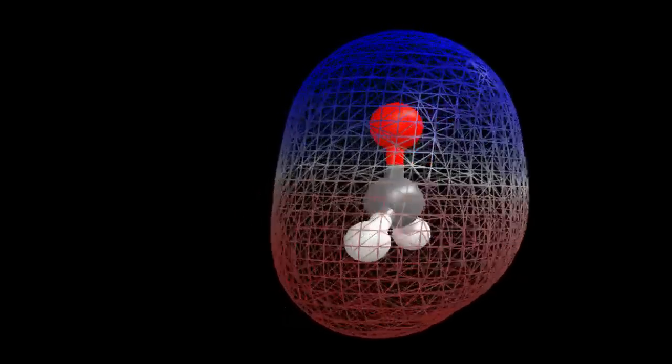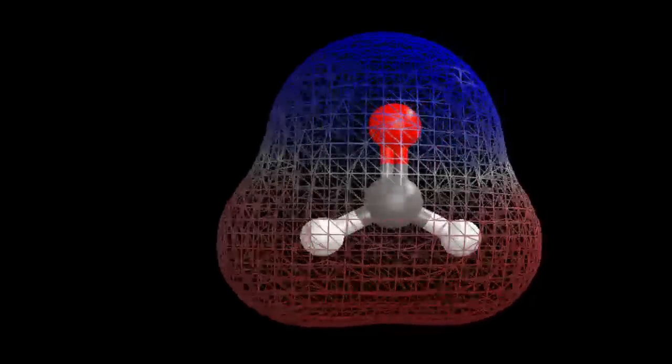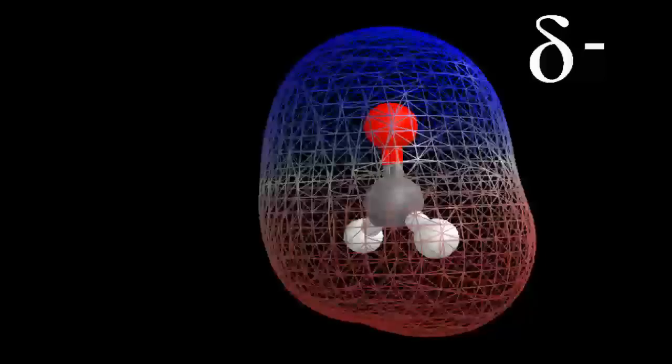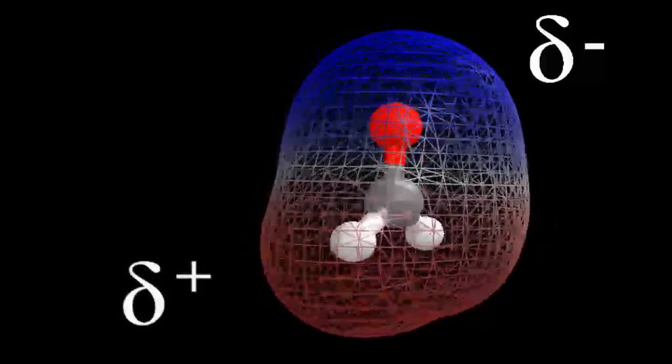We can also look at the surface on the molecule, and you'll see that that blue up there, that's a little bit more negative, and then the bottom, that's going to be more positive. Those are your poles.